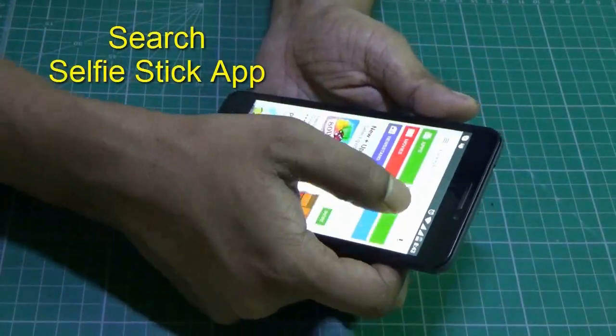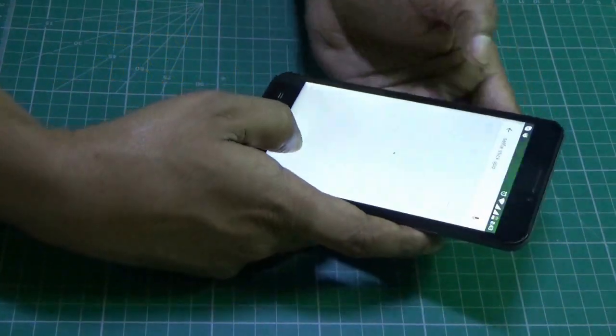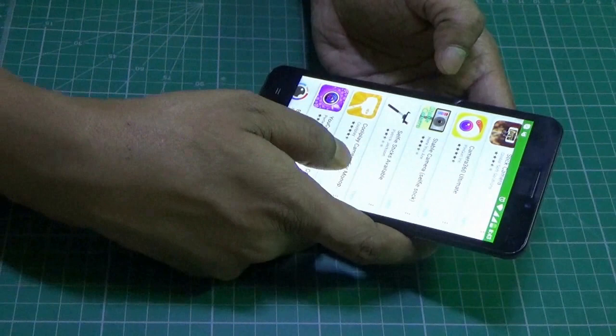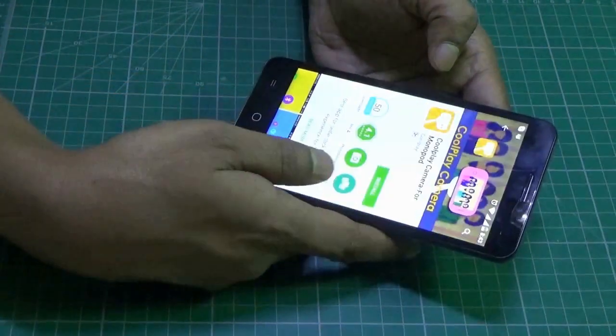Now go to Google Play Store and search for selfie stick app. I found this cool Play Camera Monopod. Download this and let it get installed.